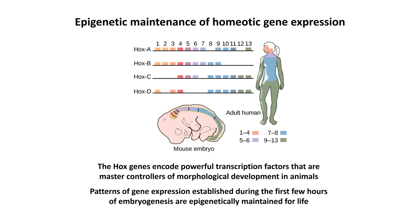A good example of epigenetic inheritance in man can be found at the homeotic genes — the Hox genes. These encode powerful transcription factors that drive the gene expression programs defining body patterning and anatomical structures in the developing embryo. It is critical that the patterns of Hox gene expression established in the embryo are maintained, so powerful epigenetic mechanisms are used to silence Hox genes from inappropriate expression in the wrong tissues.